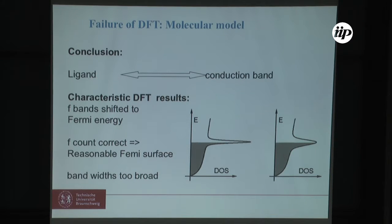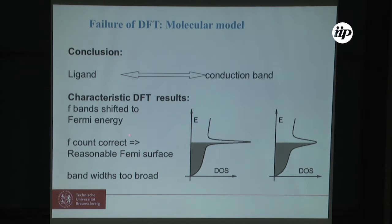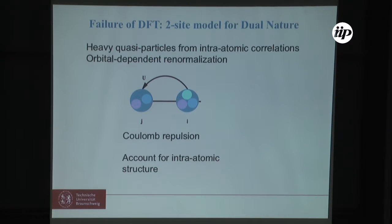If we replace the ligand by the conduction band, the characteristic result of density functional theory is that we have an f-band shifted to the Fermi energy. The f-count is usually correct so we have a reasonable Fermi level, but the bandwidth is too broad. That is the failure of density functional theory in Kondo-type systems.